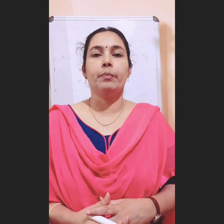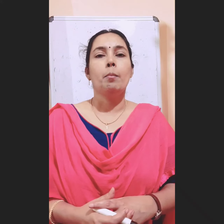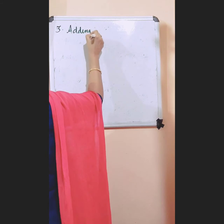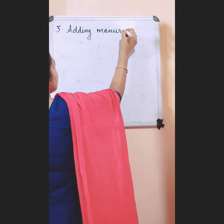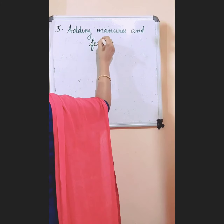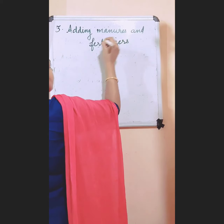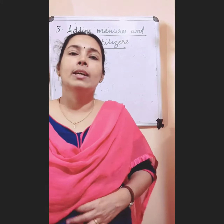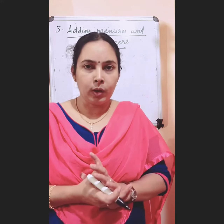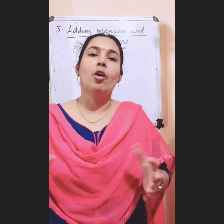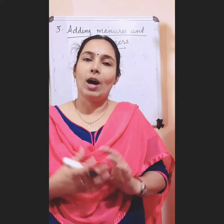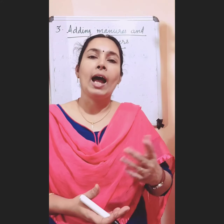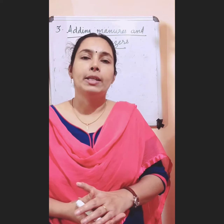Today we can study the third step. The third step is adding manures and fertilizers. So what are manures and fertilizers? These are some substances that have some nutrients, and we are adding them to the soil for the better growth of plants. Manures and fertilizers are the substances with nutrients that are added to the soil for the better growth of plants.